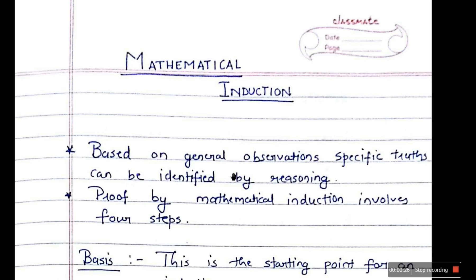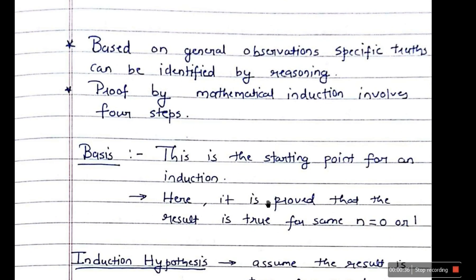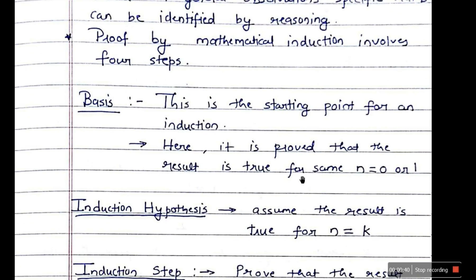So what is mathematical induction? Based on general observations, specific truths can be identified by reasoning. Proof by mathematical induction involves four steps. So there are four steps involved. First step is called basis. This is the starting point for an induction. Here it is proved that the result is true for some n equal to zero or n equal to one.